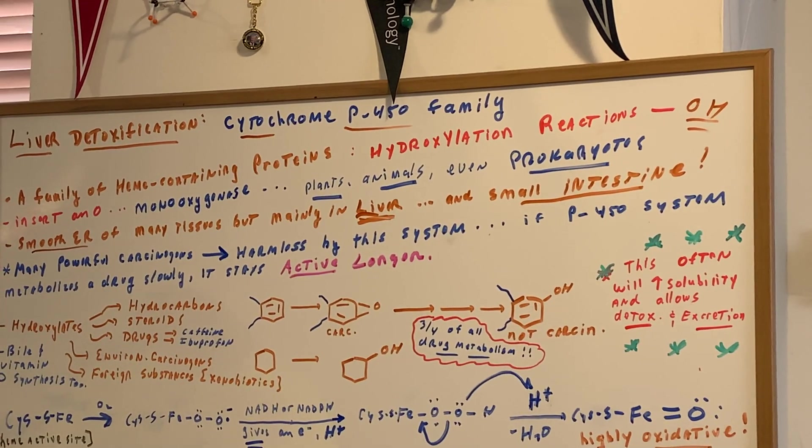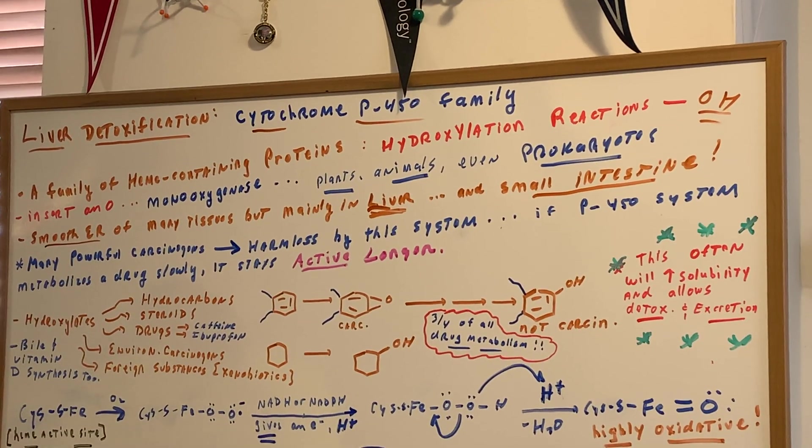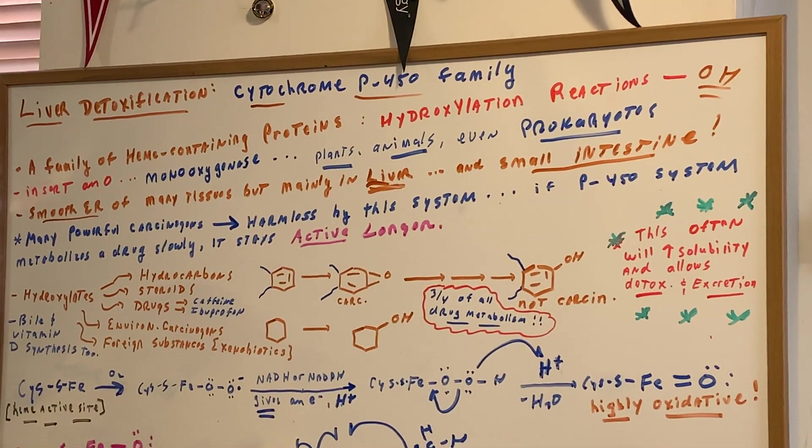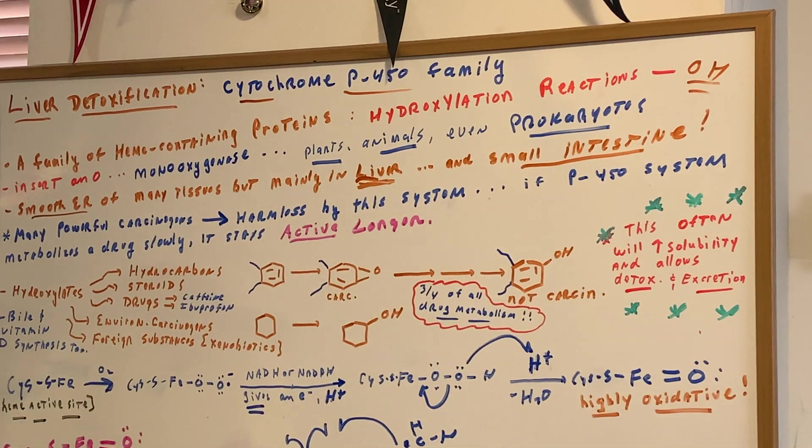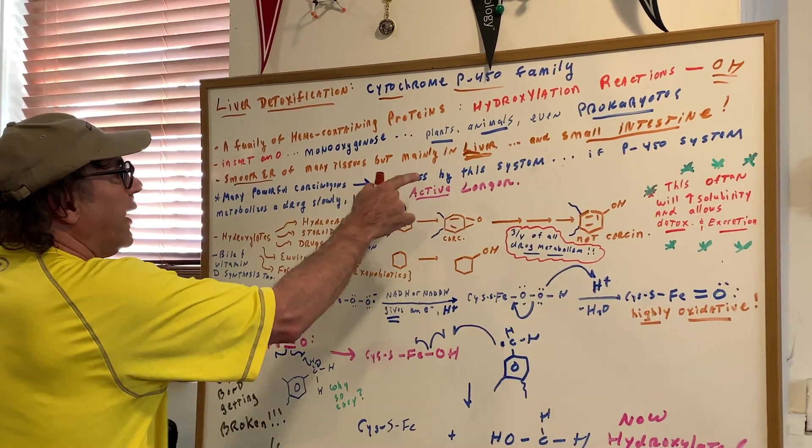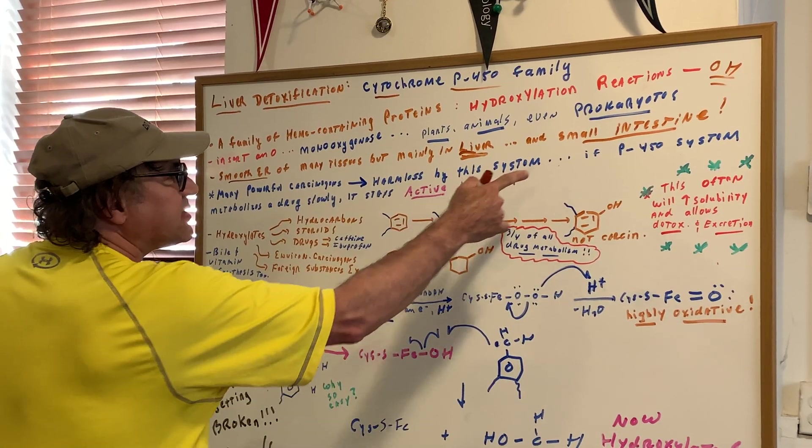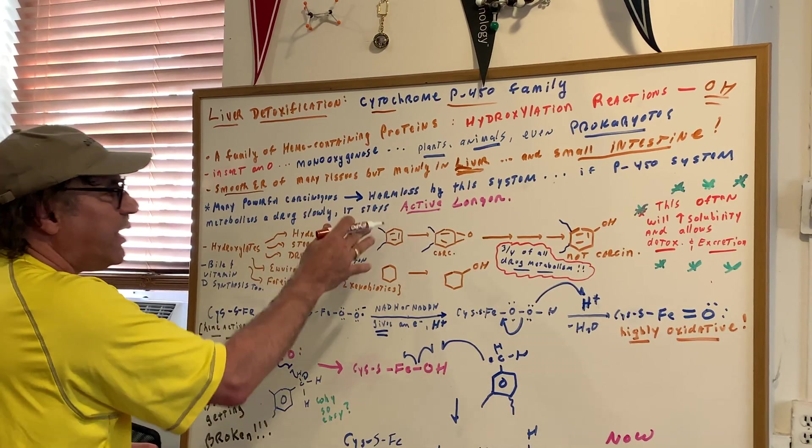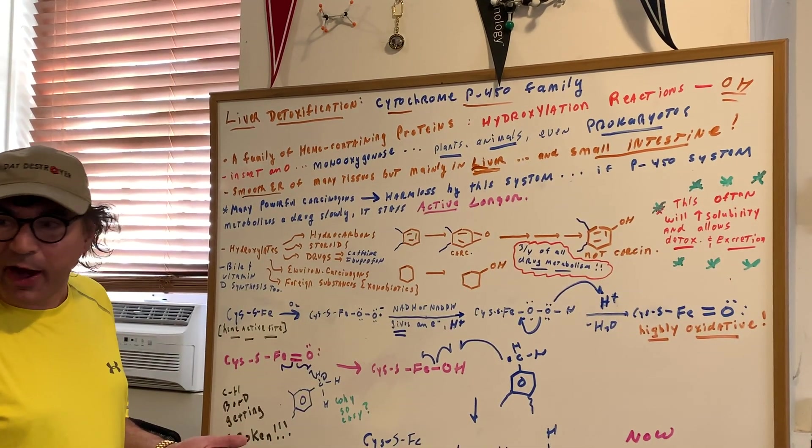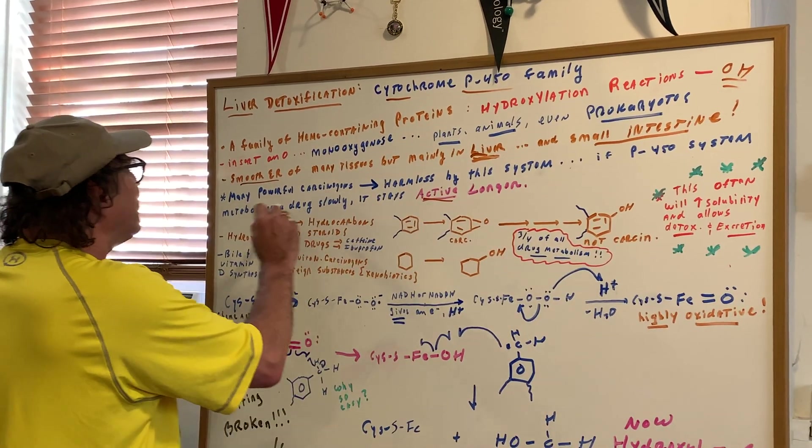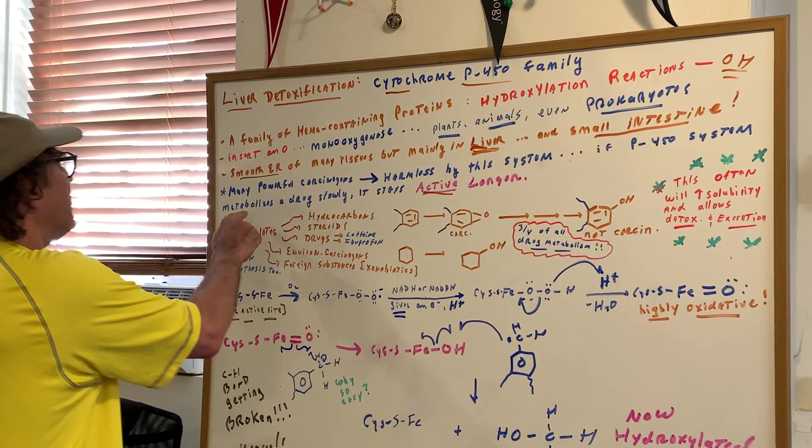Now what's the bottom line here? Many powerful carcinogens are rendered harmless by this P450 system. So this is like your best friend. What's going to happen if we have a drug, for instance, and the P450 system metabolizes this drug very slowly? Then what does that mean? It's going to stay very active. So if a drug stays active, that means that there's a slow rate of metabolism.